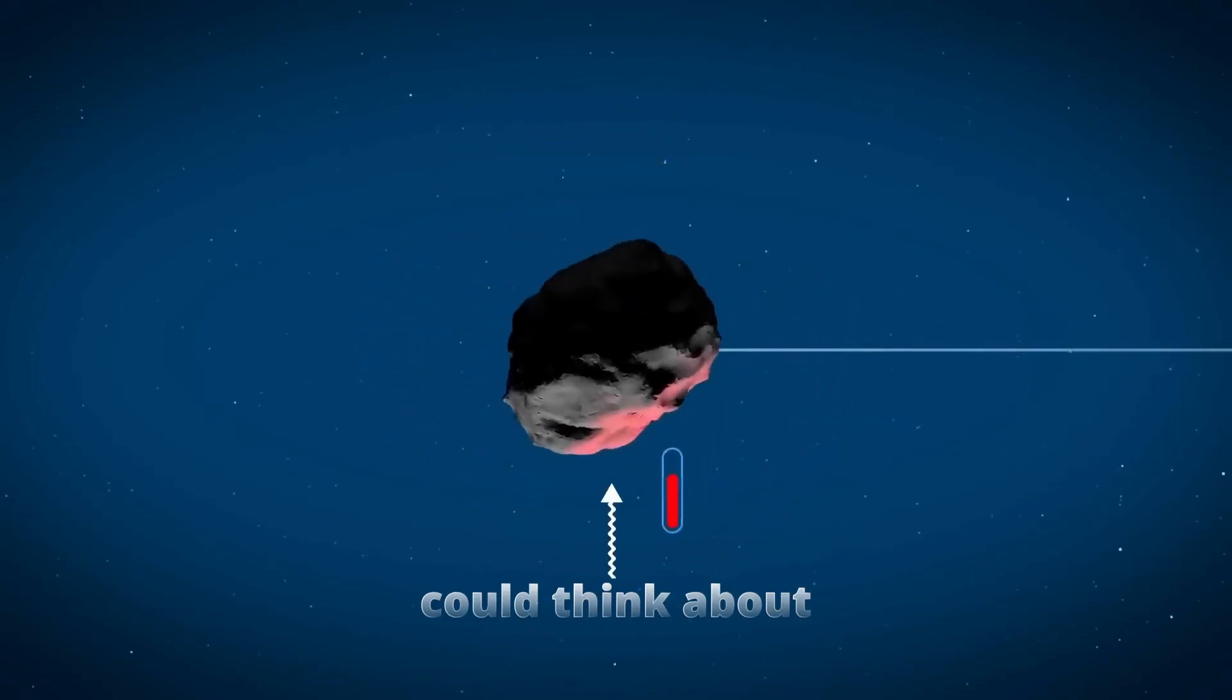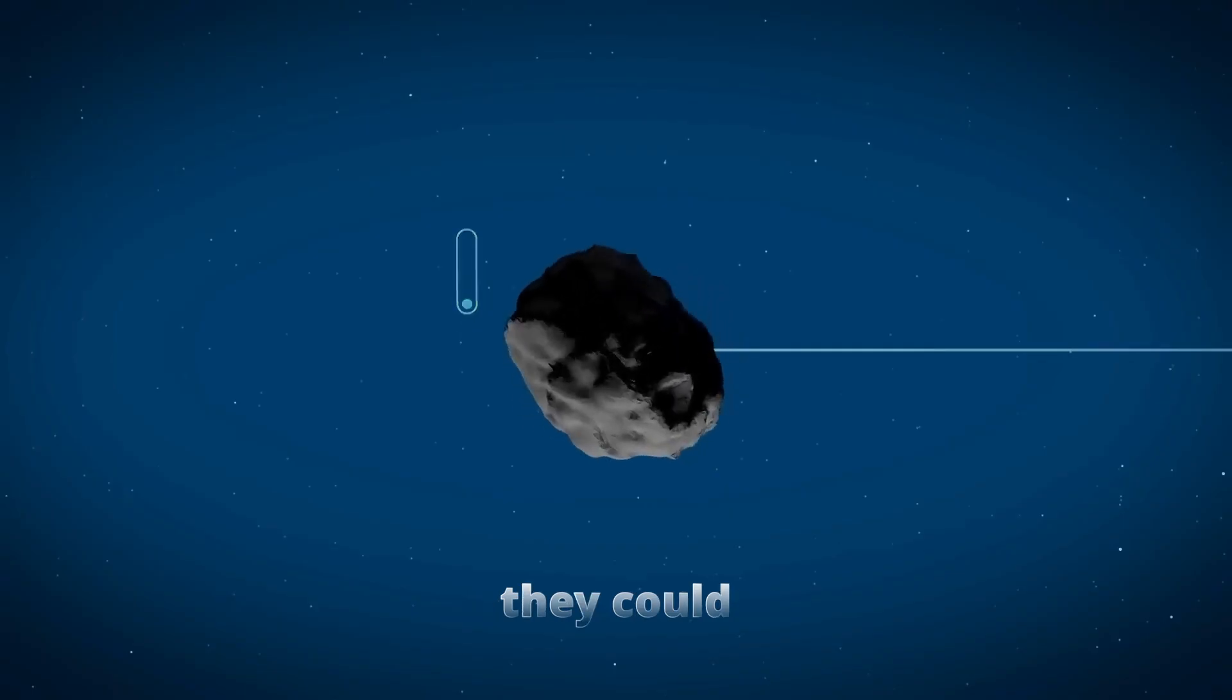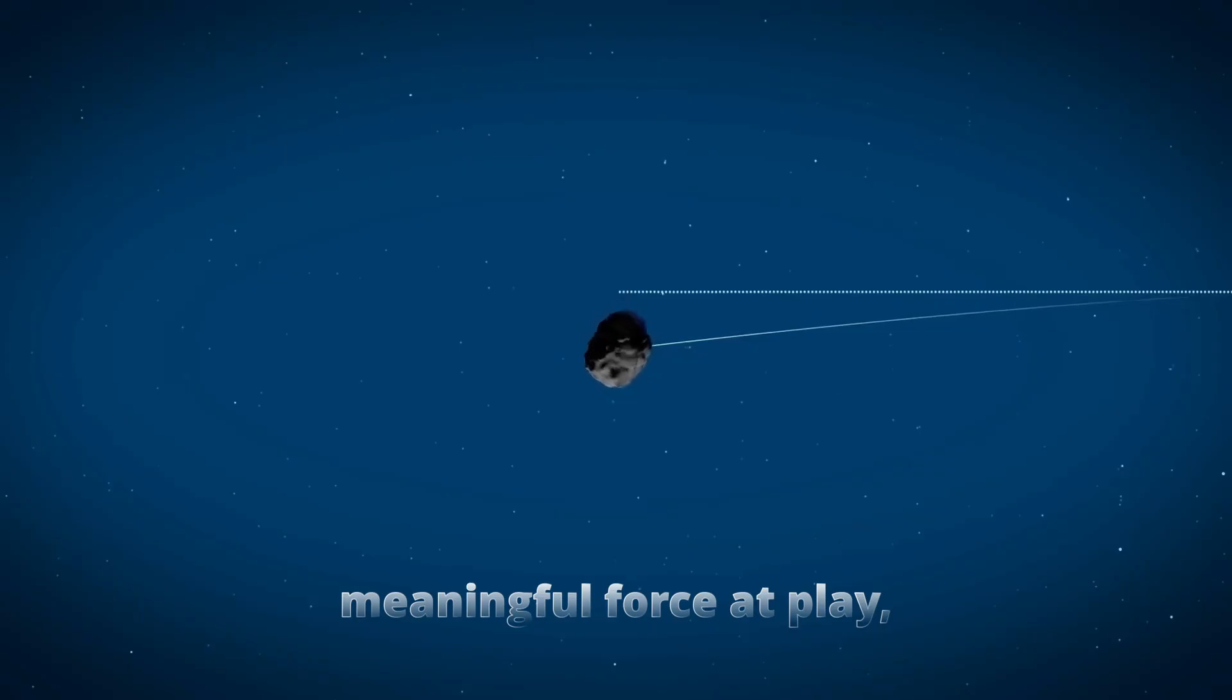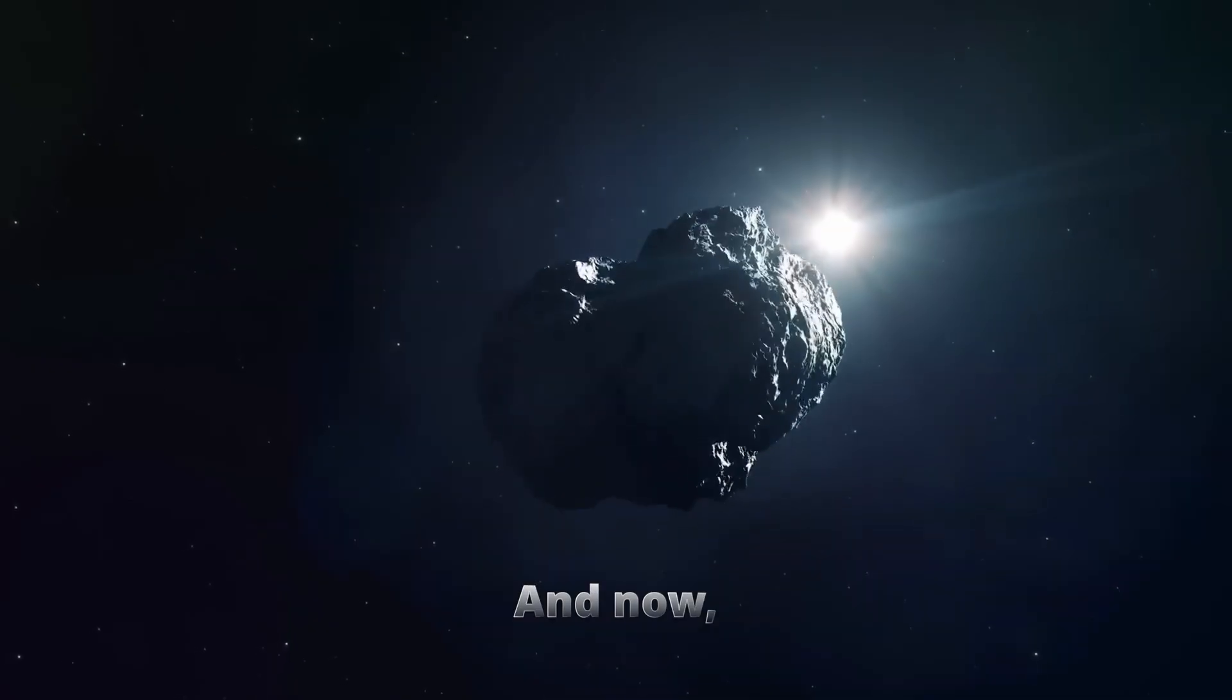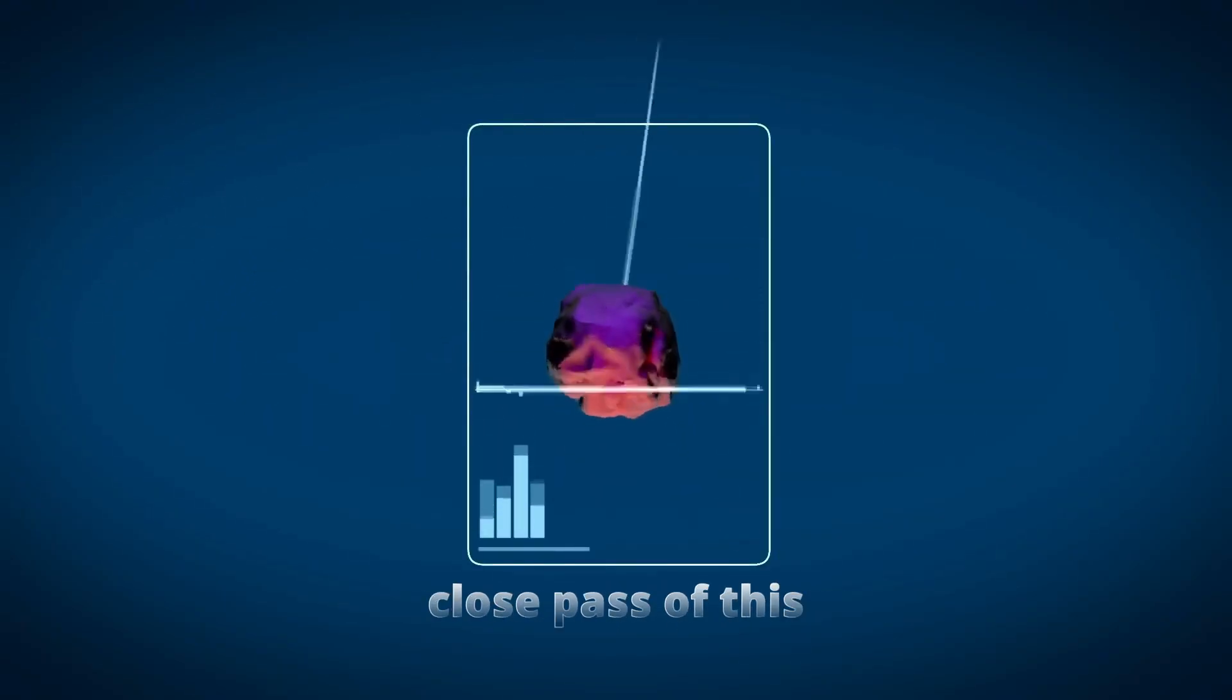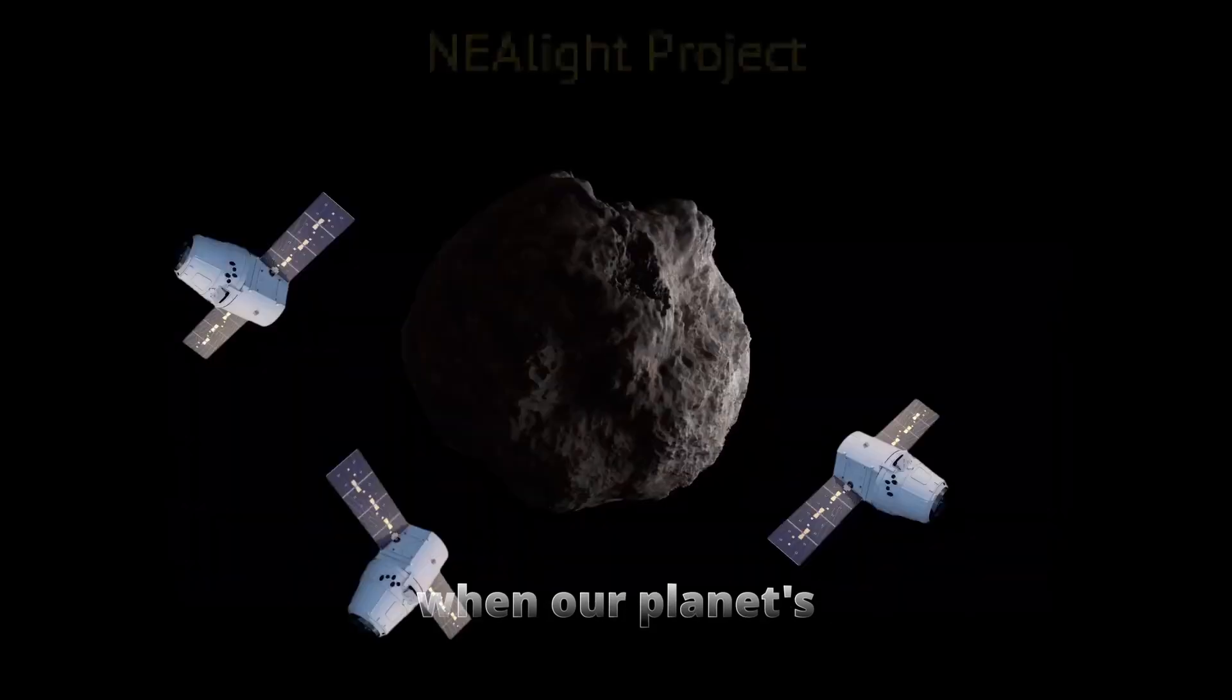The orbit was locked down with a level of confidence impossible before. And mission planners could think about 2029 in practical terms. Instead of treating the flyby like a potential crisis, they could map a mission to meet the asteroid head-on. That shift in attitude comes from precision. And that precision comes from knowing every meaningful force at play, even ones as faint as heat radiating off an ancient rock. And now, with its path understood to a degree that seemed unreachable in 2004, we're in a rare position. We can watch the largest close pass of this century not with unease, but as a planned study of how a massive asteroid moves when our planet's gravity takes hold.